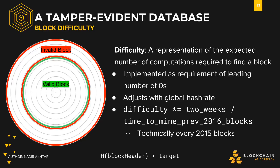How do we adjust the size of this circle? How do we set and change the target? This all happens through the difficulty, which is a representation of the number of expected computations required to find a block. Again, we can't predict how many computations anyone produces to solve the puzzle, but we can approximate based on how quickly the puzzle is solved on average. The difficulty is implemented as a requirement of the leading number of zeros on the block header hash. This is why the example block at the beginning of the section had many zeros at the start of its block hash.